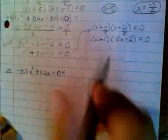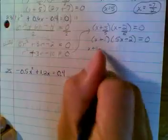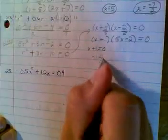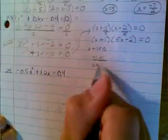And now that gives me x plus 1 equals 0. So subtract 1 on both sides. X equals negative 1.